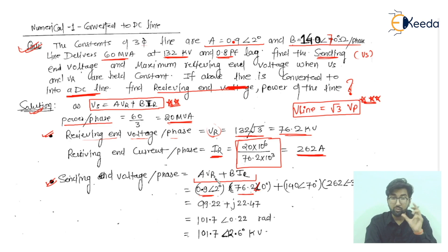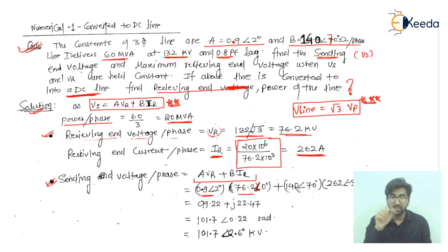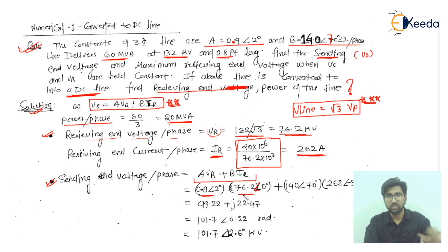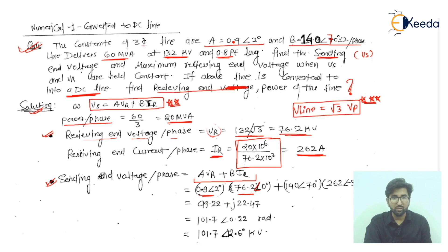After converting both terms to rectangular form, we can add them. The result is 99.22 + j22.47. Converting this back to polar form gives VS = 101.7 ∠12.6°, which is the sending end voltage per phase.